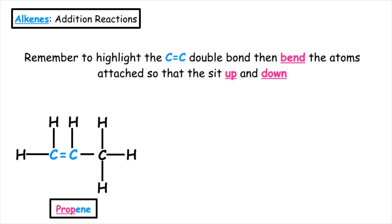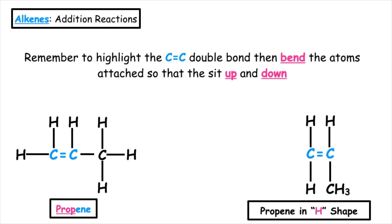So if we take propene, we can see that this is in a straight chain. And if we bend the hydrogen down on the first carbon and we bend the CH3 down on the second carbon, we can pop that into the H shape.